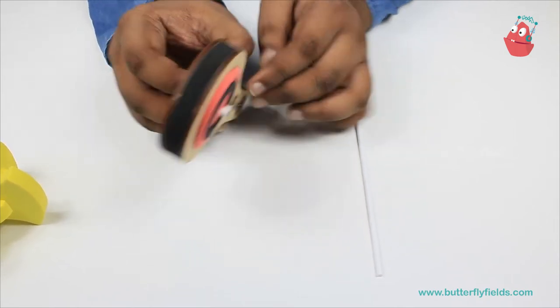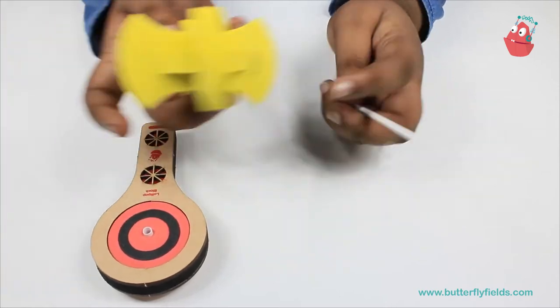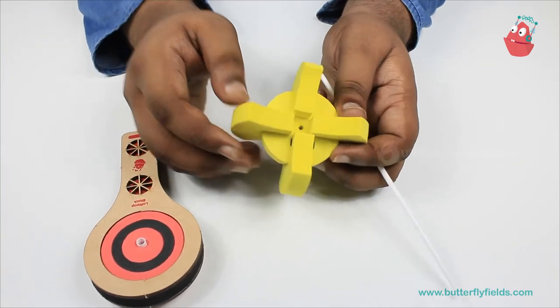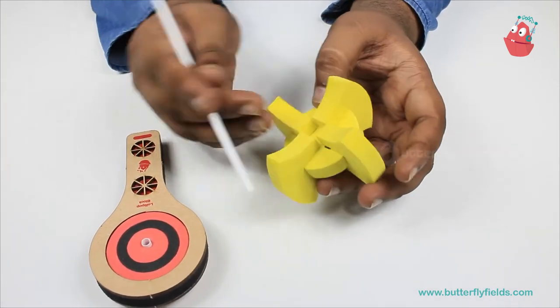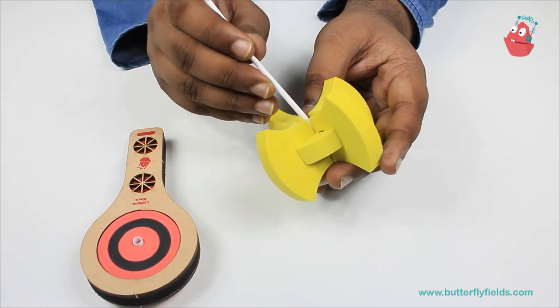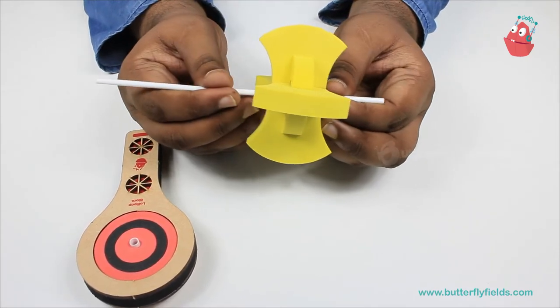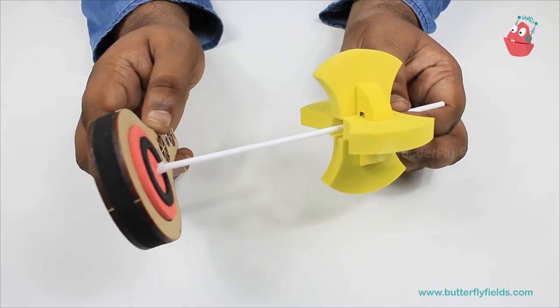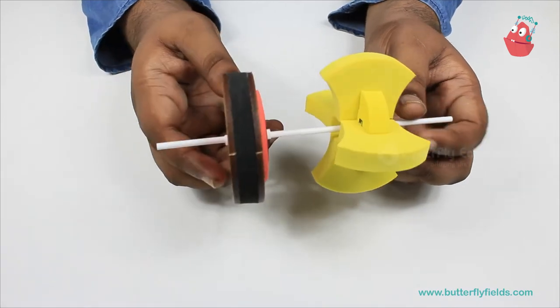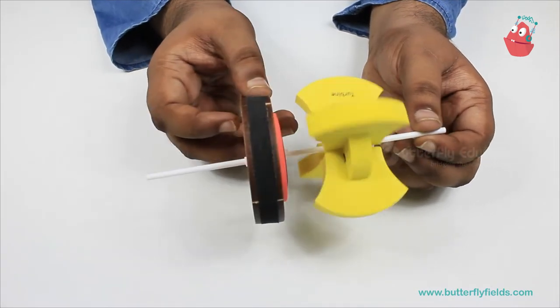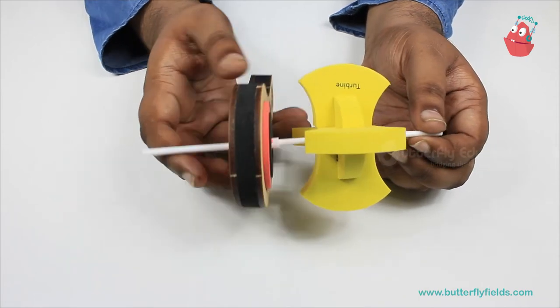Then, onto the turbine which we made, we will fix the thin long straw, and this will go inside the focus bit. Now here you can see that it can come off. For that, we will use a few pieces from the previous board.